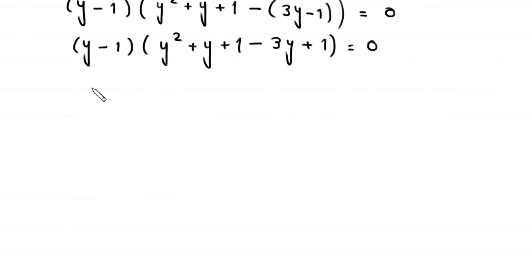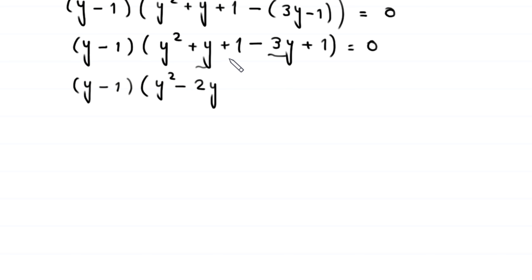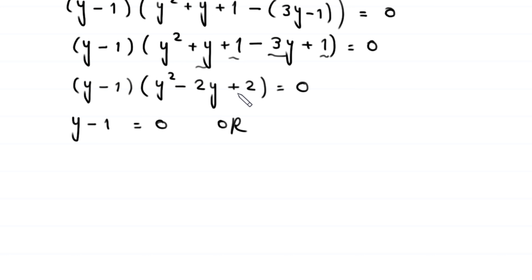Simplifying inside the bracket: y² + y − 3y + 1 + 1 = y² − 2y + 2. So the fully factored equation is (y − 1)(y² − 2y + 2) = 0. Either y − 1 = 0 or y² − 2y + 2 = 0.